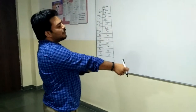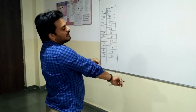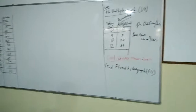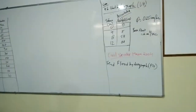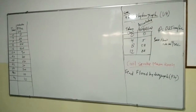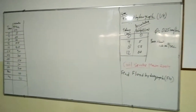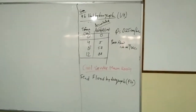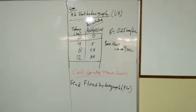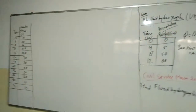Here we are discussing a problem given in the CS Civil Services Main Exam 2004. The problem states that 4-hour unit hydrograph ordinates are given for a time interval of 0 to 4, 8, 12, 16, up to 44 hours.